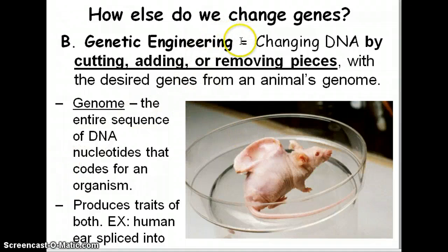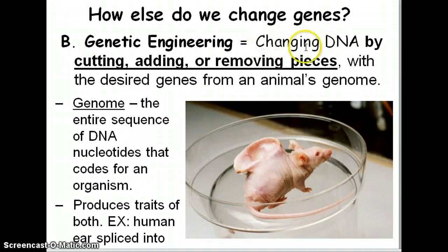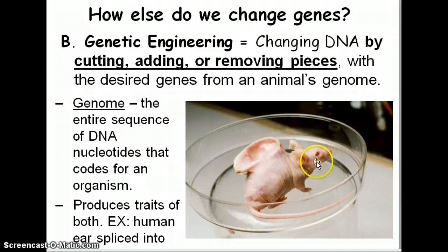So how else can we change genes other than just breeding organisms? A third way we can change the genes of an organism is by actually going in and engineering or changing the genes. A gene is a piece of DNA, so we're literally changing the DNA by cutting, adding, and removing pieces of it. And we can insert the desired gene into another animal's genome. If you look at this picture, this is called the Vacanti mouse. This was one of the first transgenic organisms because it's mainly a mouse but it has a human ear.